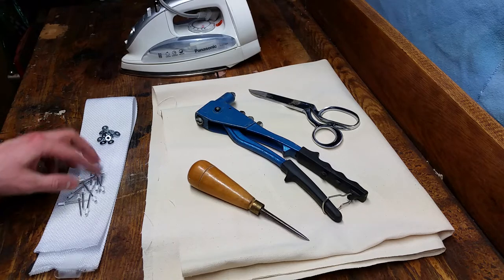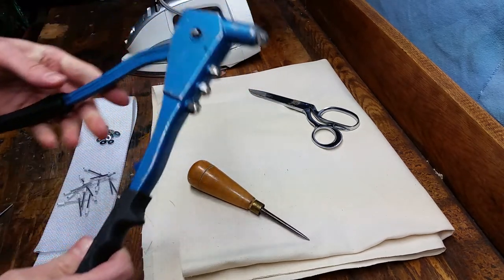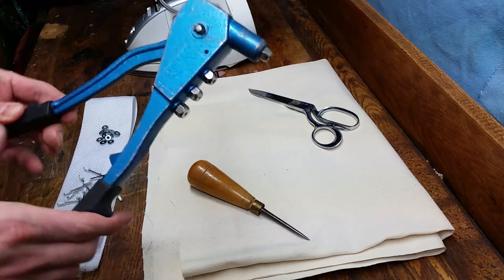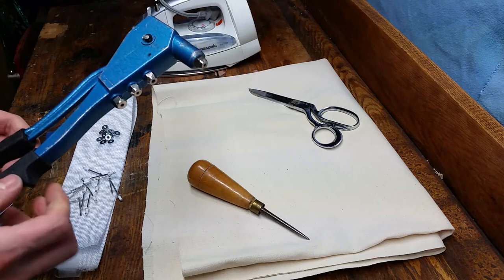In order to use pop rivets, you're going to need a pop rivet gun. We'll go through how to use this very quickly. There's lots of videos on YouTube. They are cheap - this one was on Kijiji for ten dollars.